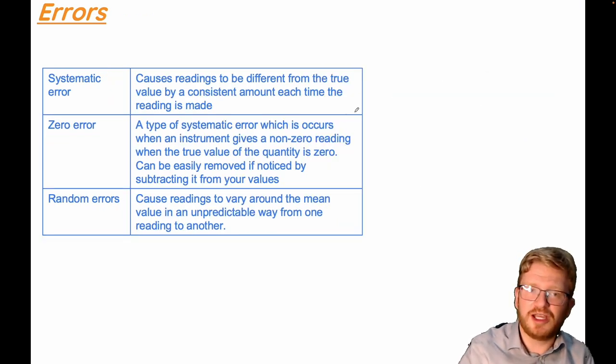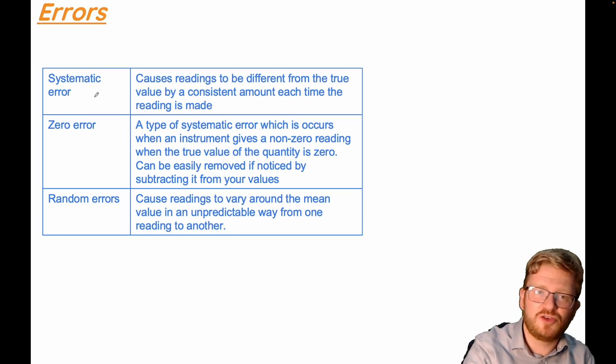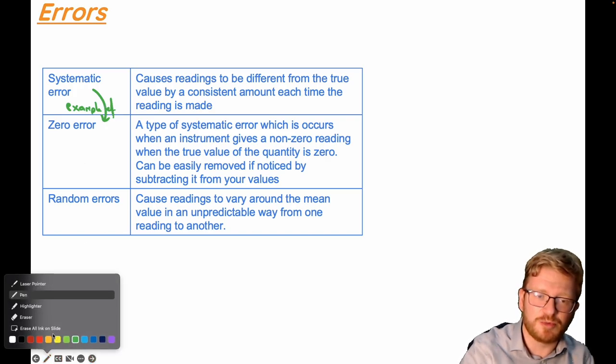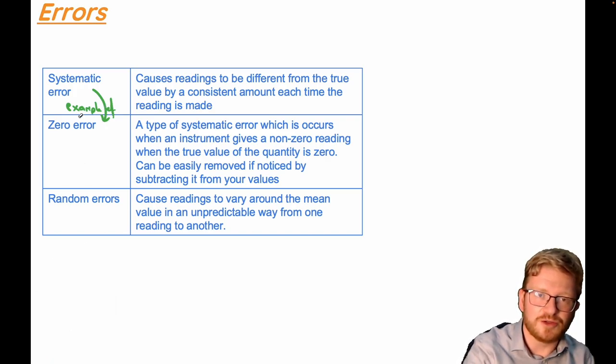When we think about the actual types of error, there are three main types. A zero error is an example of a systematic error. Zero errors are examples of systematic errors. A systematic error causes readings to be different from the true value by a consistent amount each time.